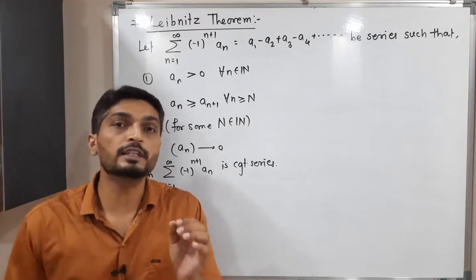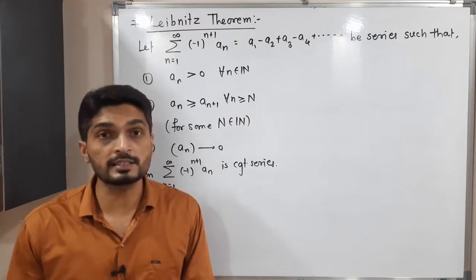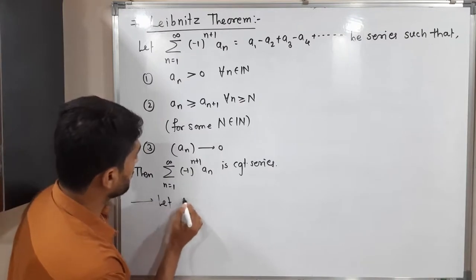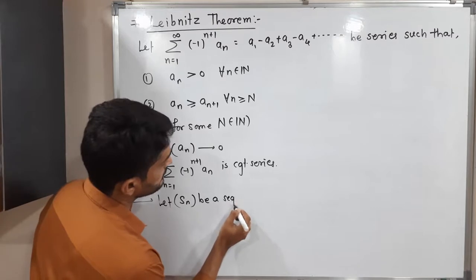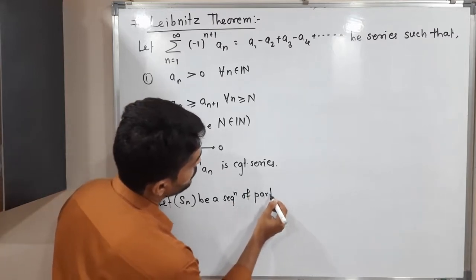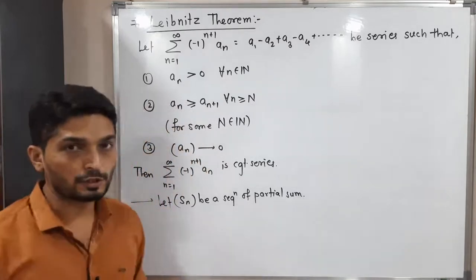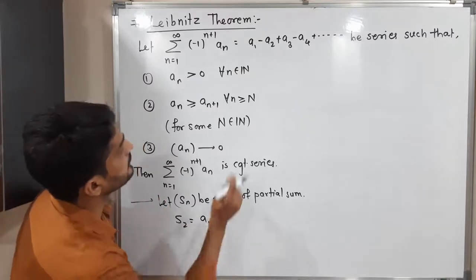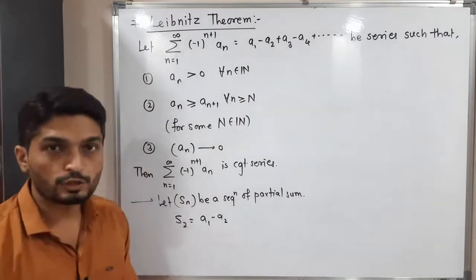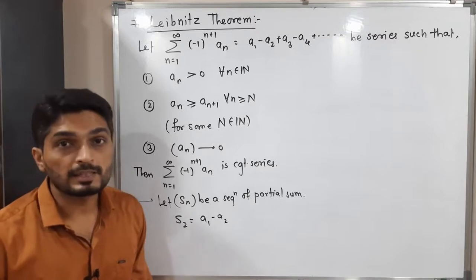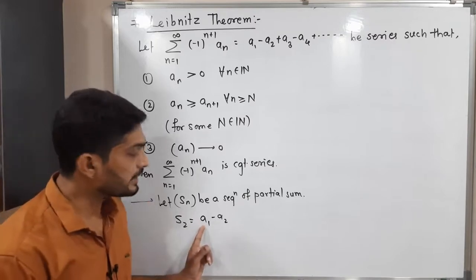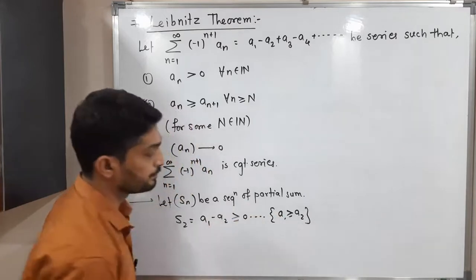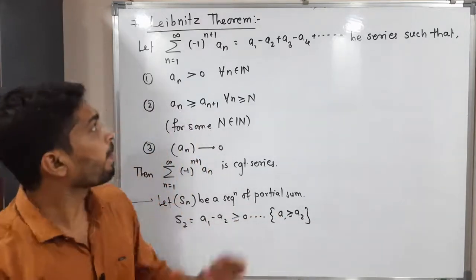To prove any series is convergent, we take help of the sequence of partial sums. Let s_n be the sequence of partial sums of this series. s1 equals a1. s2 is the sum of the first two terms, a1 minus a2. Since a_n is a decreasing sequence, a1 is greater than or equal to a2, so s2 is greater than or equal to zero.